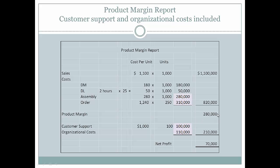So I would produce a report that is more comprehensive. It would still have the product margin of $280 per unit, but as a reminder to management, I would also include customer support at $1,000 per customer times 100 customers — the total from the cost pools — as well as the organizational common costs of the entire company of $110,000, totaling $210,000. The net profit for the entire company would be $70,000. This keeps everyone reminded that the $280,000 product margin contributes towards these other costs, which will always be there as well.